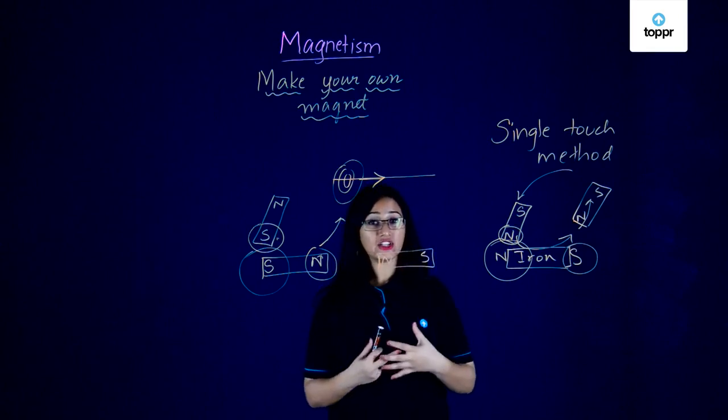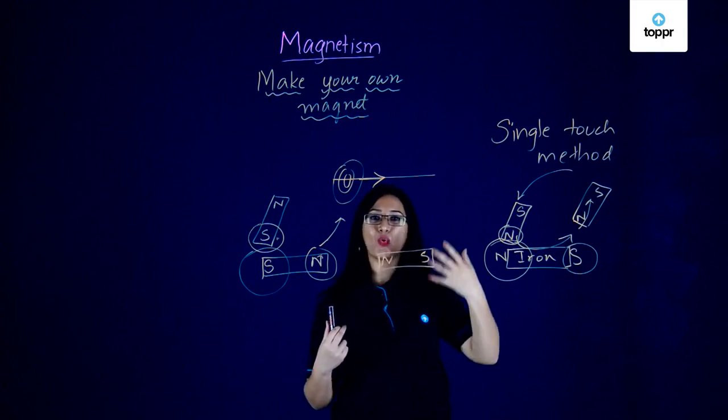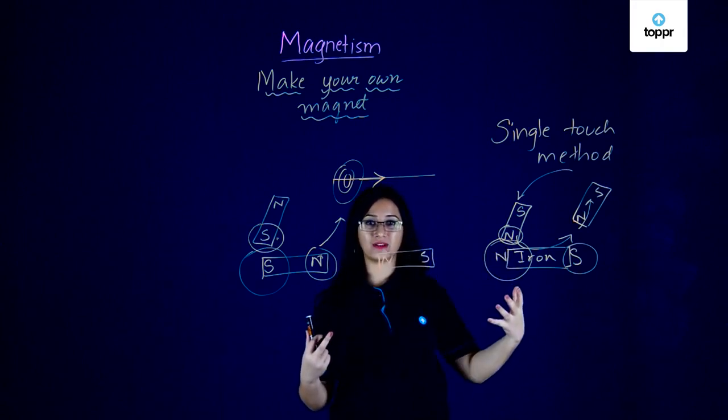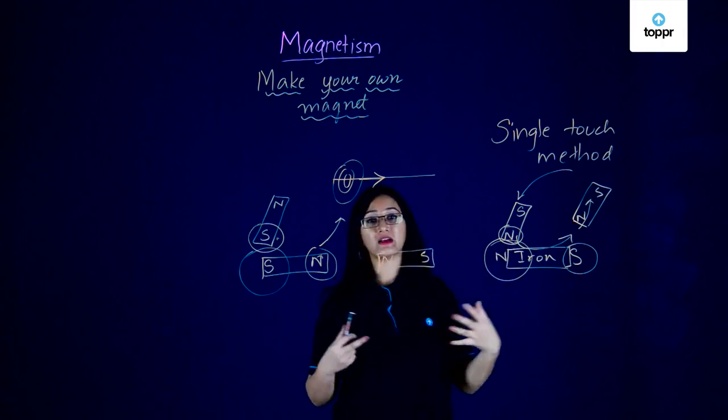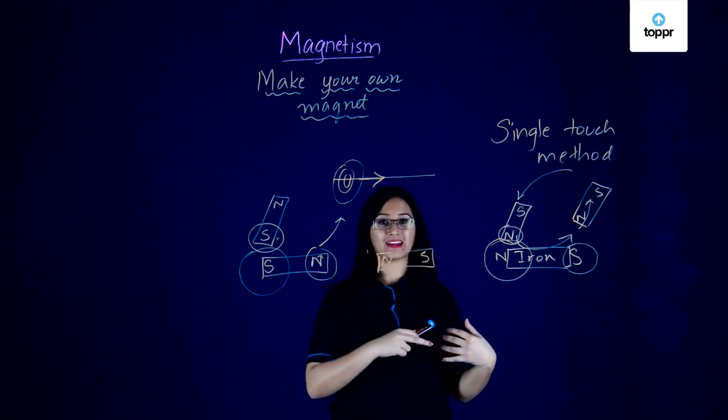In fact, whenever any charged particle moves, it actually has its own magnetic field around it. And because of this magnetic field of an electric current, it can create another magnet.